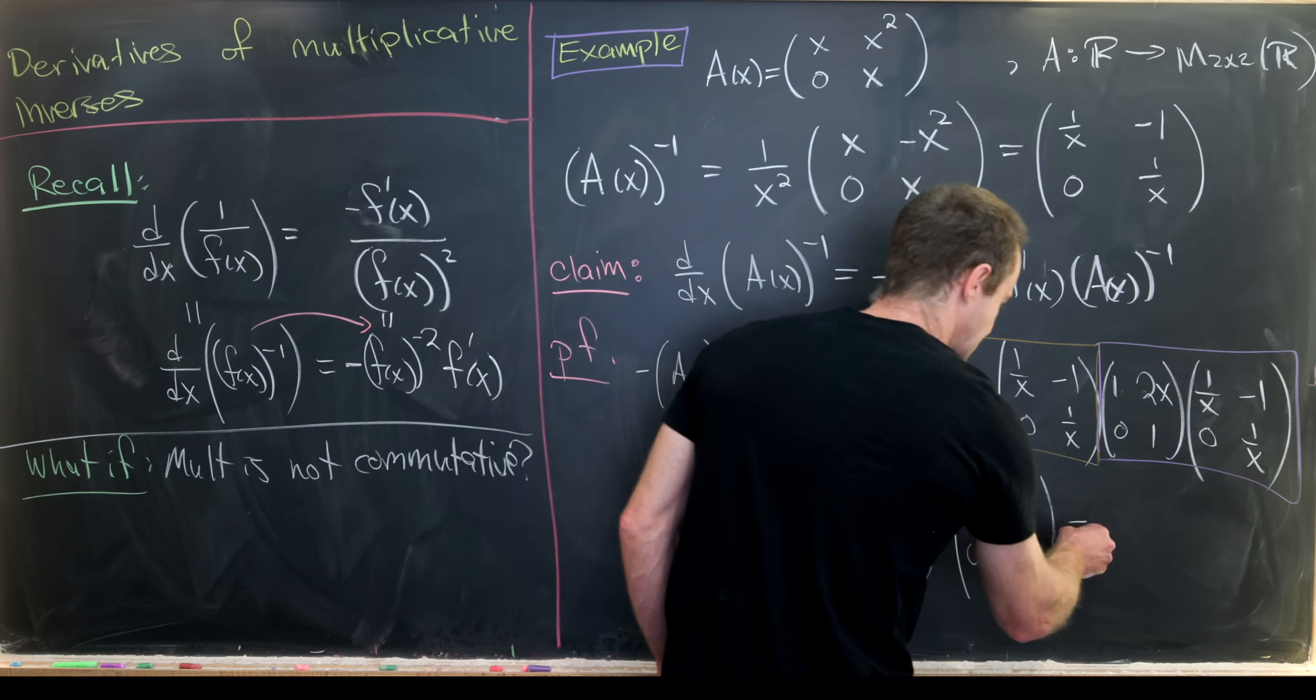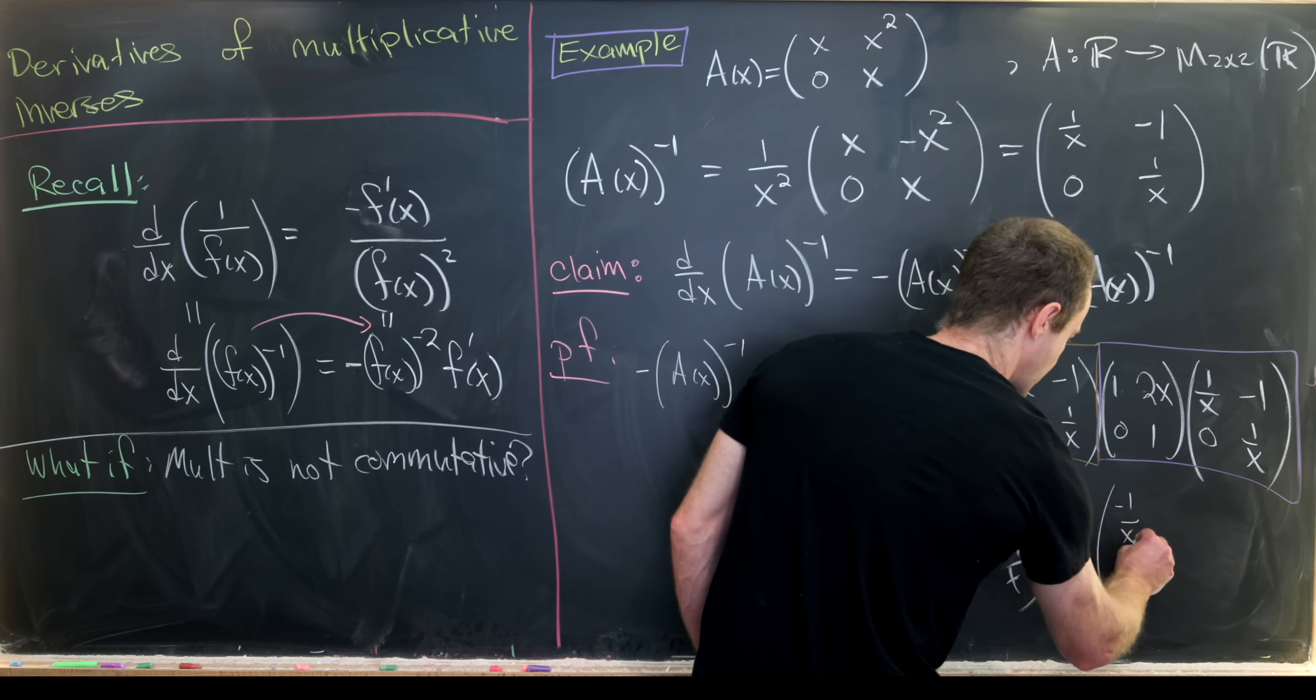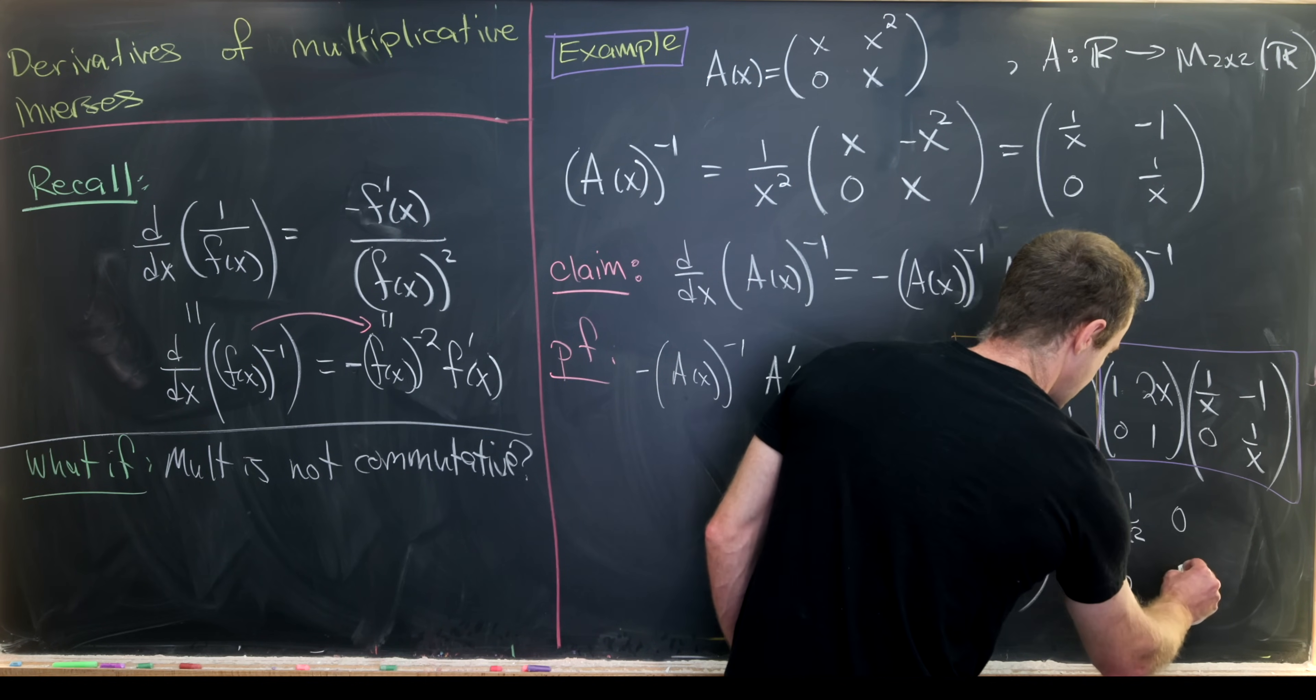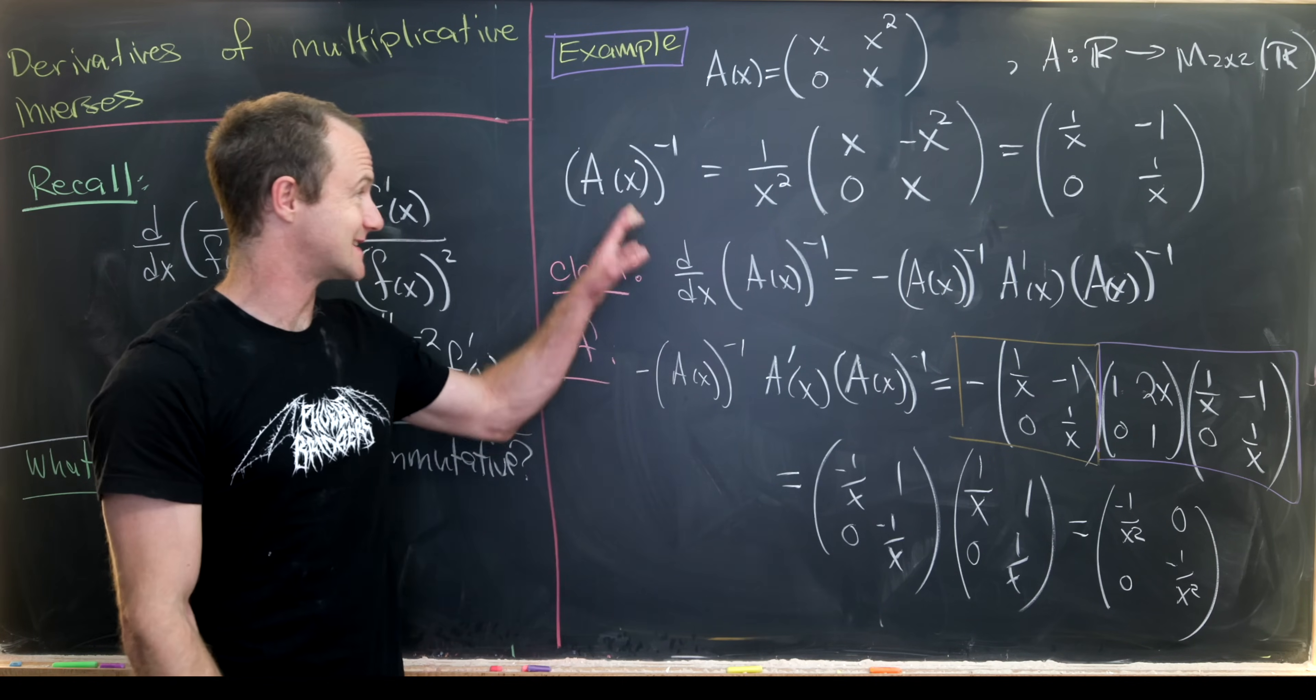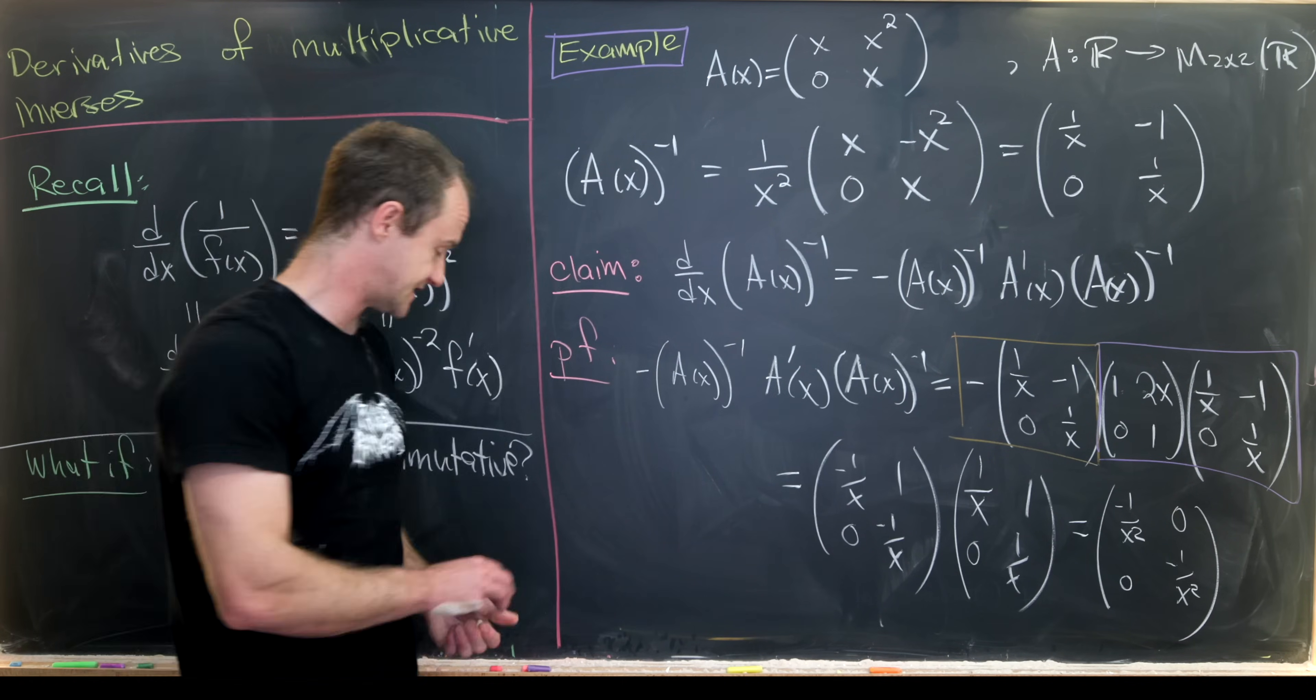Now let's multiply those together. Notice that we get minus 1/x squared, 0, 0, minus 1/x squared.